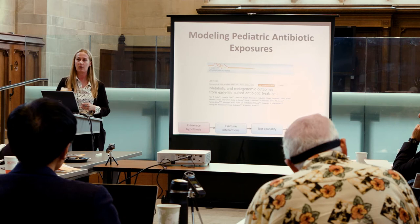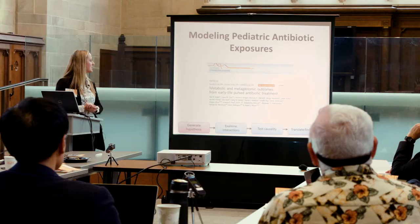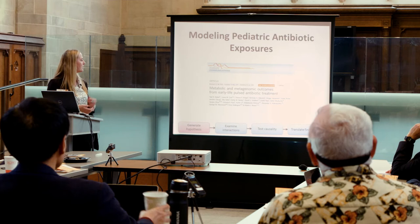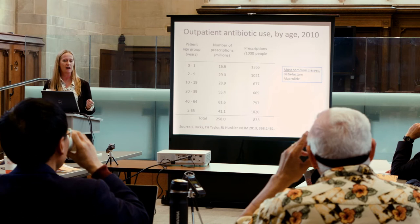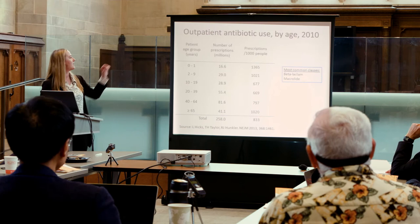One criticism of this model is that even though it helps identify which microbes can change host metabolism, it doesn't match what kids actually get. So we launched another study pioneered by Yael Nobel in the Blaser Lab to really model pediatric exposures. In the U.S., by the time kids are three years old they've received on average four courses of antibiotics — the highest rates are during infancy, and the most common classes are a beta-lactam and a macrolide antibiotic.